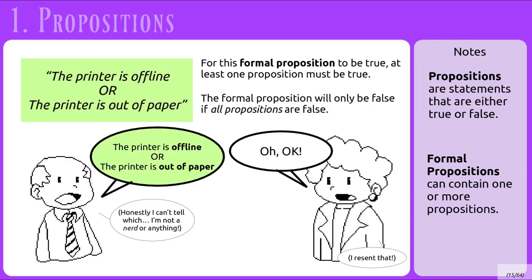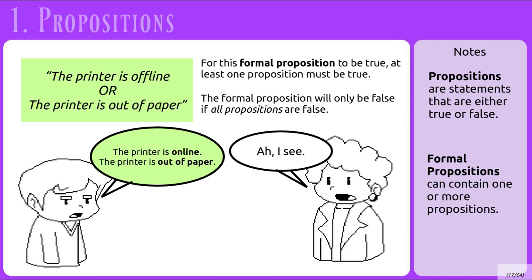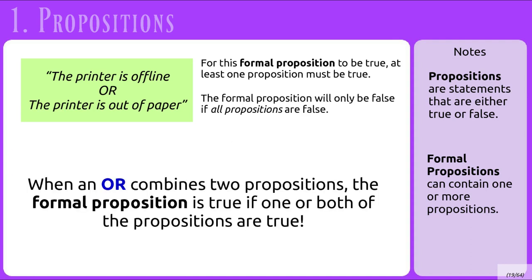Now let's look at this with an OR statement. If the first person tells us that the printer is offline OR the printer is out of paper, we can assume that one or the other is true, or maybe both, but it's okay if one of them is false. If someone later tells us the printer is offline AND has paper, that's still valid. Or if someone says the printer is online but out of paper, that also works. The only time this doesn't work is if someone says the printer IS online AND has paper — both original statements are false. When OR combines two propositions, the formal proposition is true if one or both are true, and only false if all propositions are false.